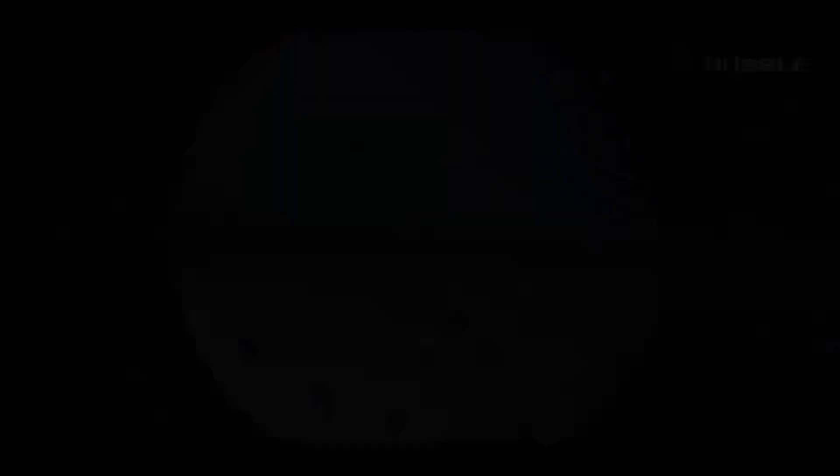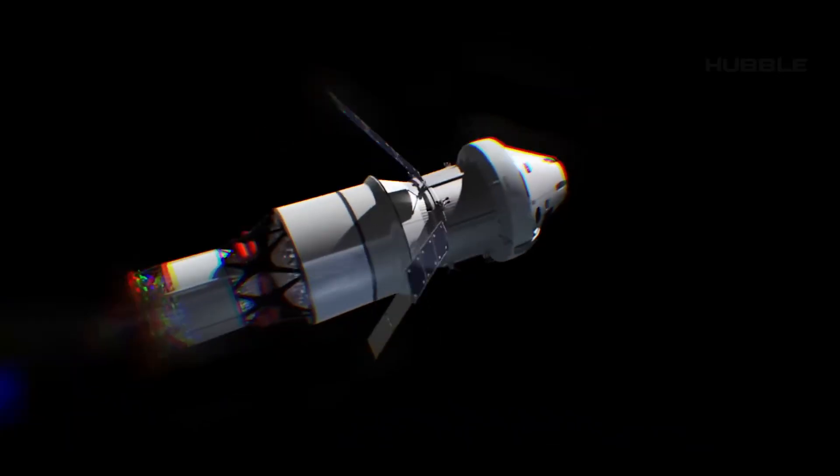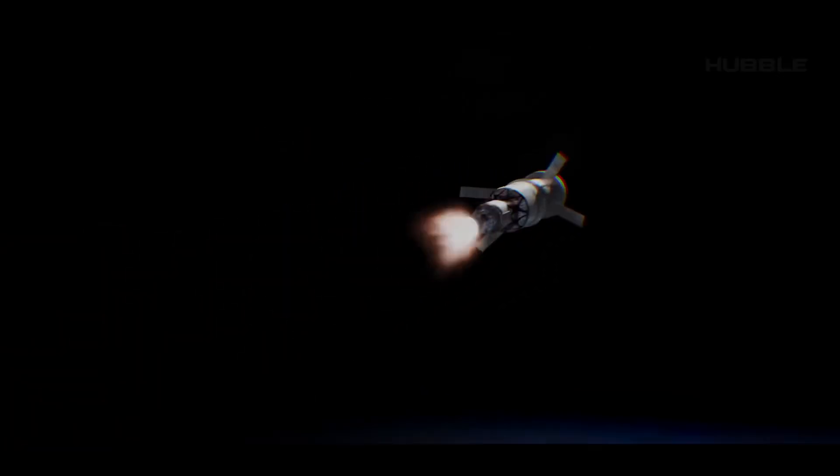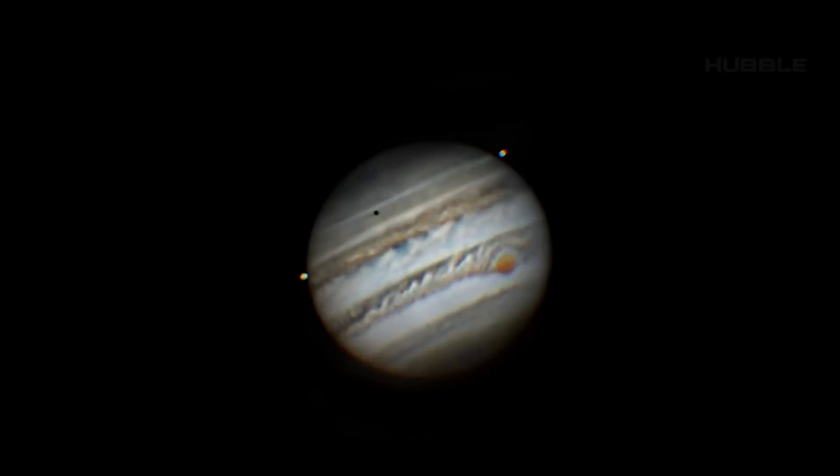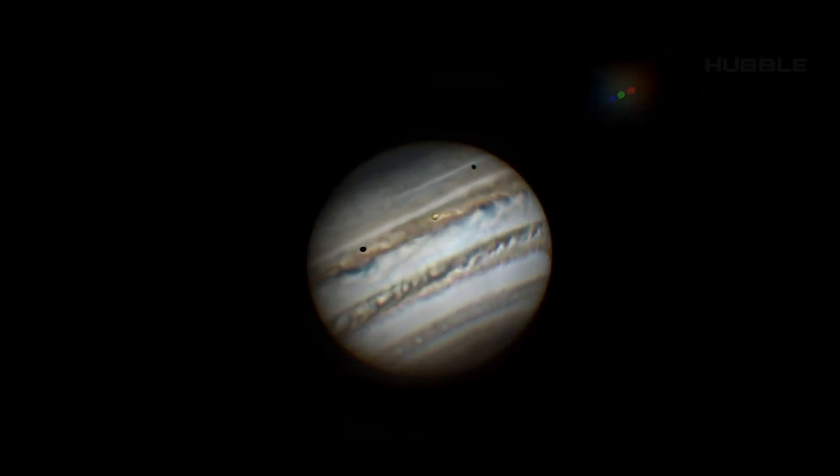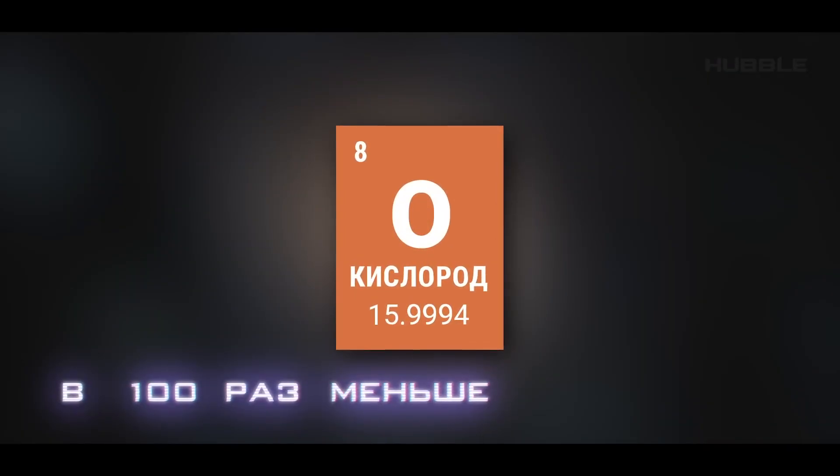Also, Juno failed to uncover one secret. This secret concerns Europa, another major moon of Jupiter. It turns out that rumors about its potential habitability may be greatly exaggerated. The automated probe, after collecting data, found that Europa produces 100 times less oxygen than previously thought.